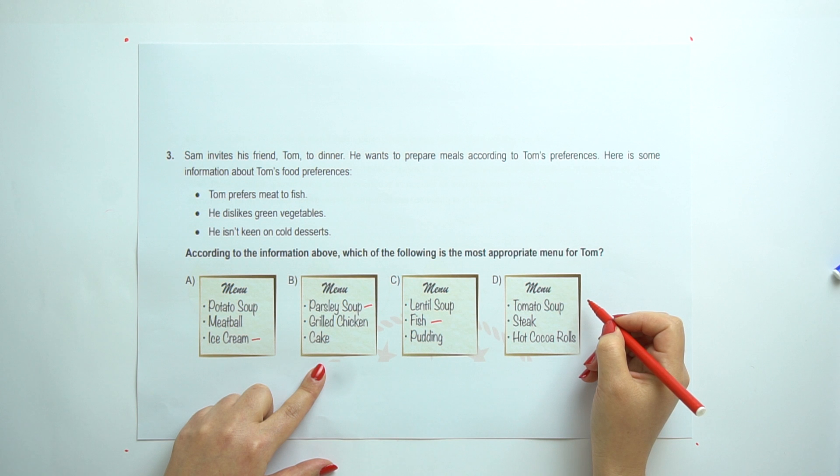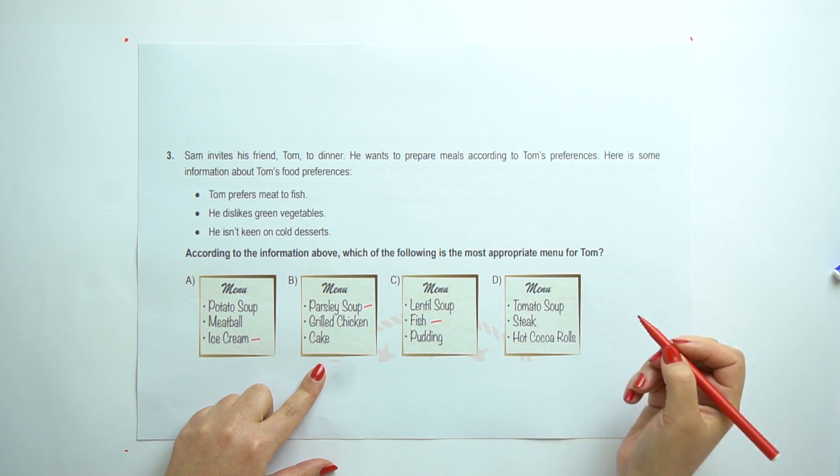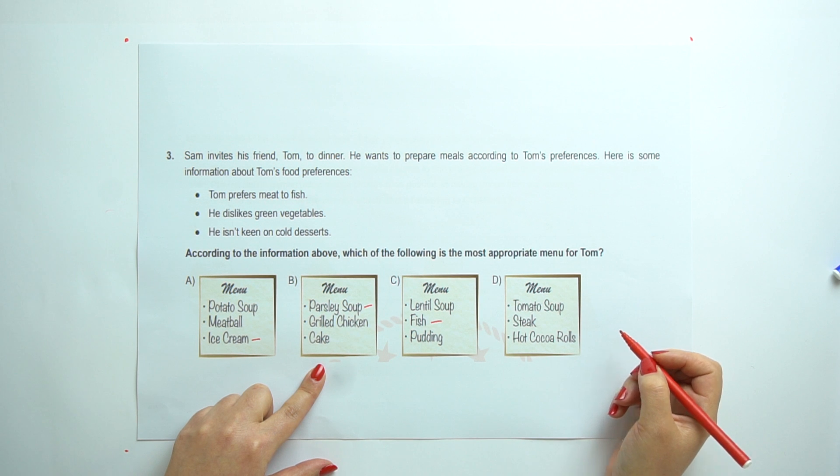And D. Tomato soup, steak and hot cacao rolls. Yes, we can say this one.